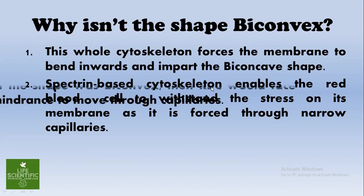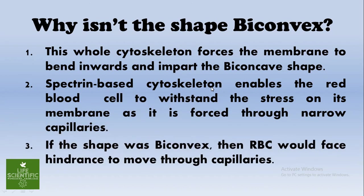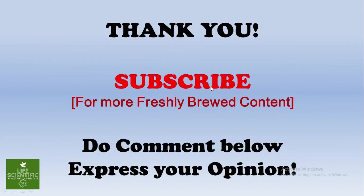If the shape was biconvex, the RBCs would face hindrance moving through capillaries. Imagine the shape of the RBC to be biconvex — that is, the membrane forced outwards. This would produce much more hindrance and much more stress over the RBCs. I hope I have explained the reason behind the biconcave shape of an RBC. Subscribe to my channel, Life Scientific, for more freshly brewed content.